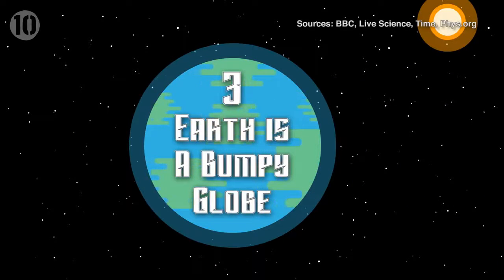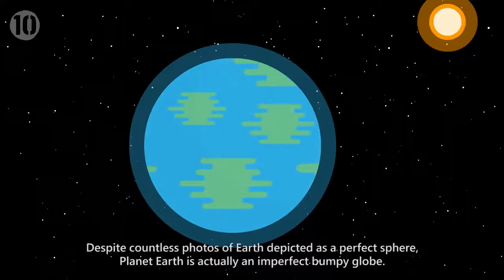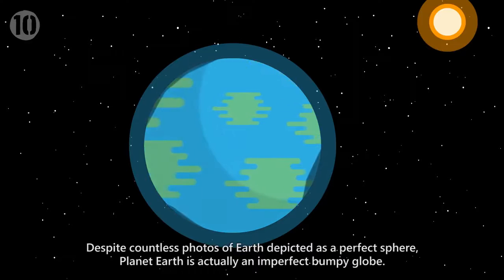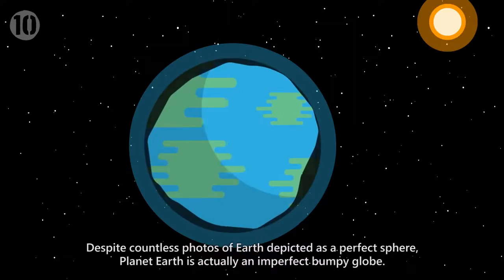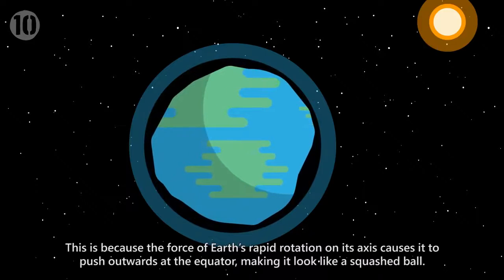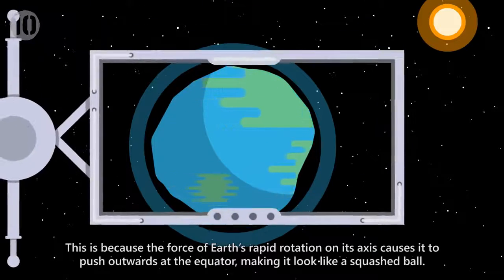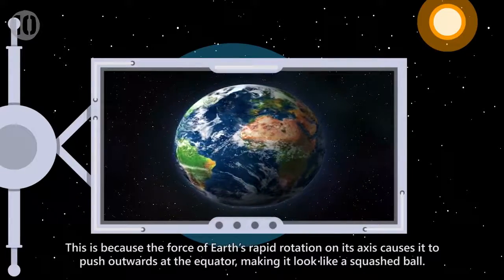Number 3: Earth is a Bumpy Globe. Despite countless photos of Earth depicted as a perfect sphere, planet Earth is actually an imperfect, bumpy globe. This is because the force of Earth's rapid rotation on its axis causes it to push outwards at the equator, making it look like a squashed ball.